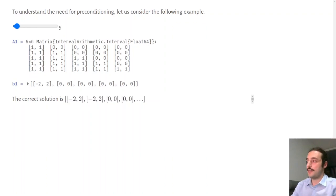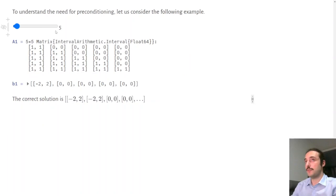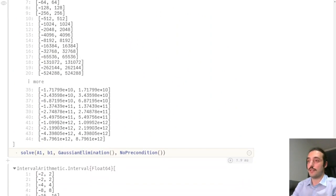Now, let's solve this problem without preconditioning with two algorithms, Gaussian elimination and Hansen-Bliek-Rohn. In both cases, we see that we get the first two elements right. However, the other elements, instead of being zero, are intervals with an exponentially growing width. And this is indeed confirmed if we take a larger matrix. We see that the width of the intervals grows and grows.